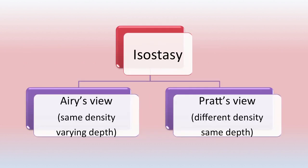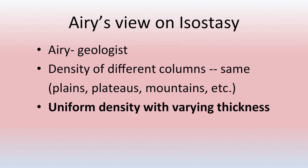Isostasy can be explained with two viewpoints as you can see in the picture. One is Airy's view of isostasy, which says there is same density but varying depth of various features on the earth surface. Pratt's view says there is different density but the same depth. We will first deal with Airy's view on isostasy.